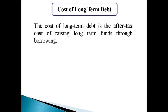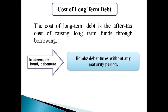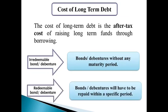Now we start with the cost of the first source of capital — that is, cost of long-term debt. The cost of long-term debt is the after-tax cost of raising long-term funds through borrowing. A company can issue two types of bonds or debentures: one is irredeemable bond or debenture, and another is redeemable bond or debenture. Irredeemable bond refers to a bond which has no specific maturity period — that is, irredeemable bonds are perpetual in nature. On the other hand, redeemable bond refers to a bond which has a specific maturity period.